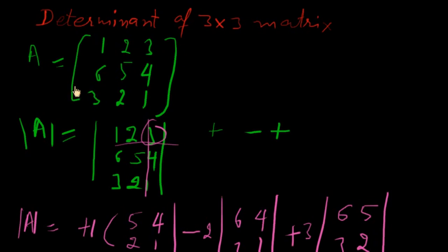We are taking one example of matrix: 1, 2, 3, 6, 5, 4, 3, 2, 1 are its elements.